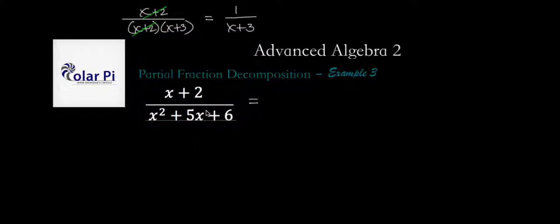Now, we have to do the partial fraction decomposition on this, but notice that this denominator factors as x plus 2 times x plus 3. So we're going to get an x plus 2 in the denominator from factoring this, and the other factor is x plus 3.